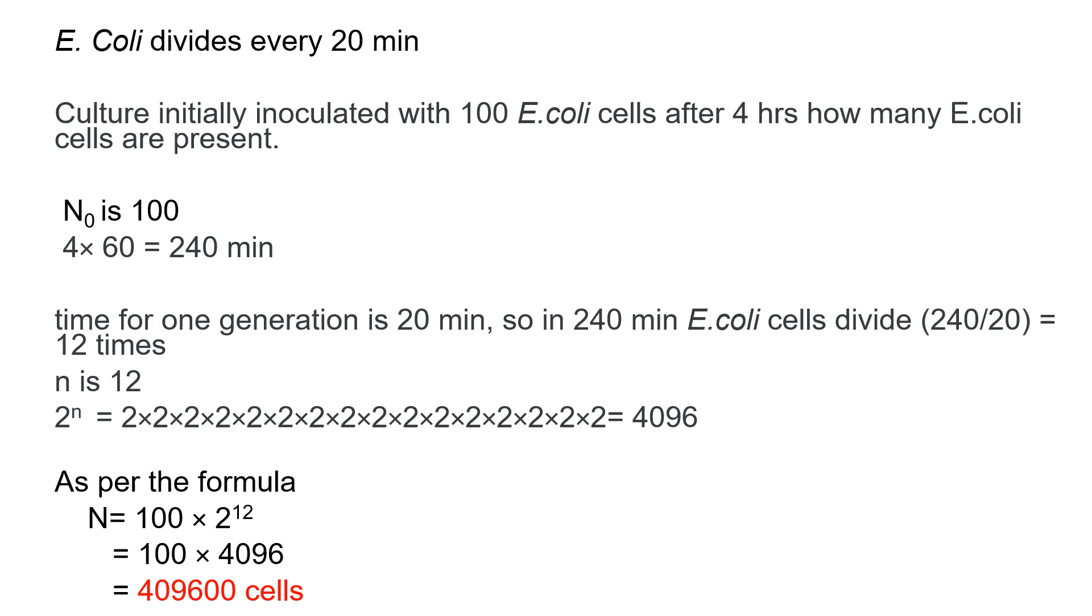So in 240 minutes, how many times do E. coli cells divide? 240 divided by 20 equals 12 times. So the number of generations, which is represented by small n, is 12. 2 to the power n becomes 2 to the power 12, which means multiply 2 twelve times, and we get 4096. Now put these values in the formula: 100 into 4096. And the result is, after 4 hours of initial 100 cells, E. coli produces 409,600 cells.